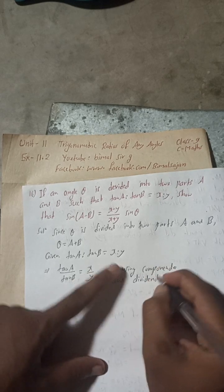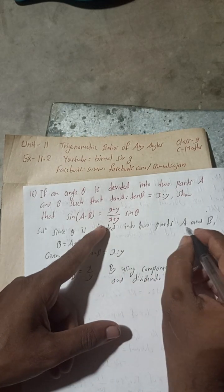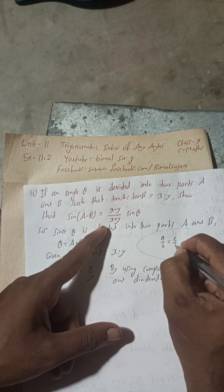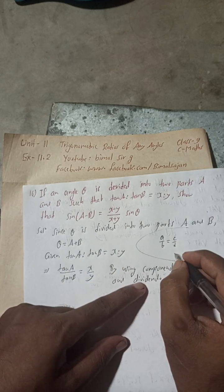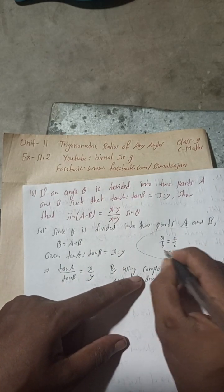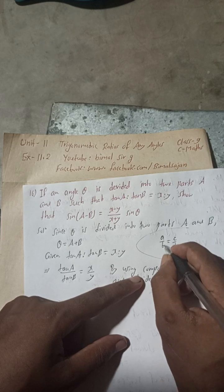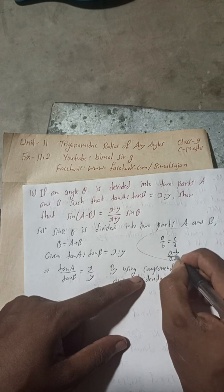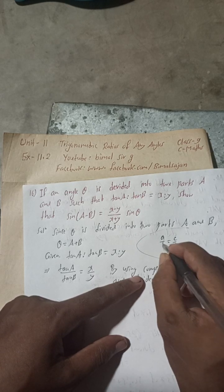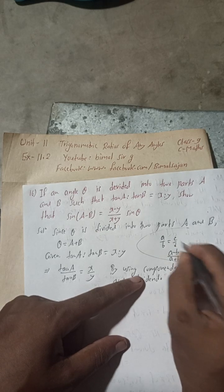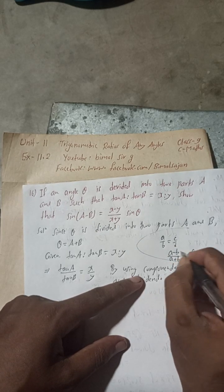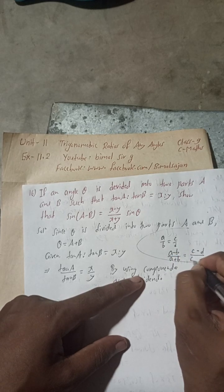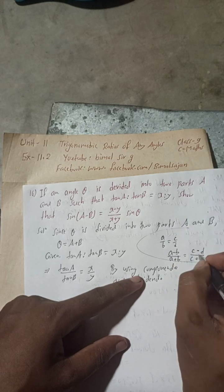What is the meaning of componendo and dividendo? Suppose if we have A by B equals C by D. Then, the componendo and dividendo means the numerator part A, then minus B the denominator part, and again numerator part A plus the denominator part B. Same here also, C numerator part minus D denominator part, and C numerator plus D denominator.